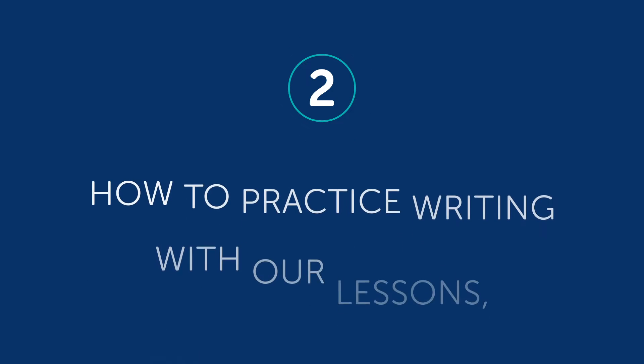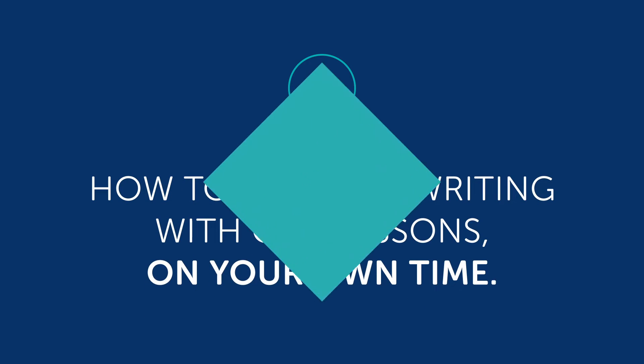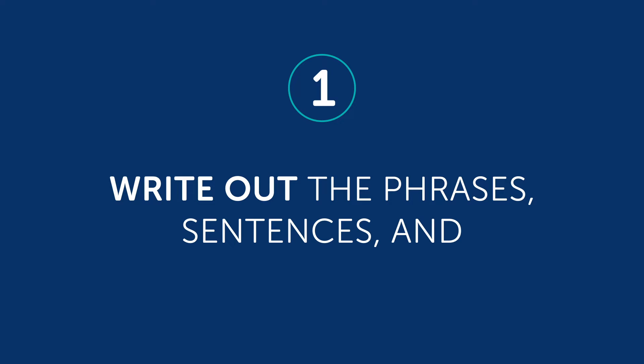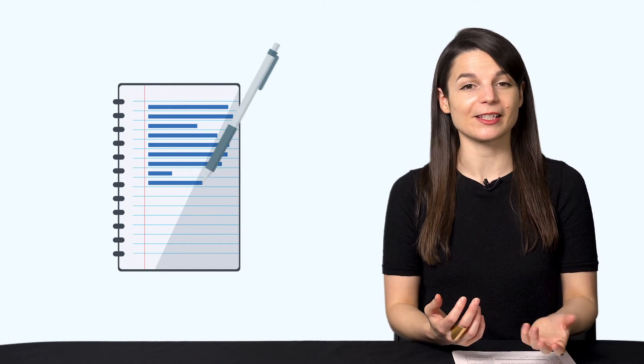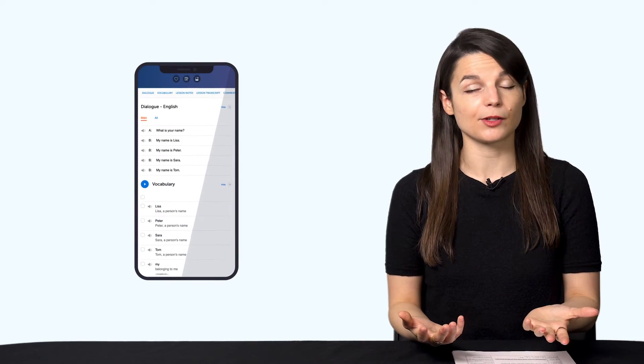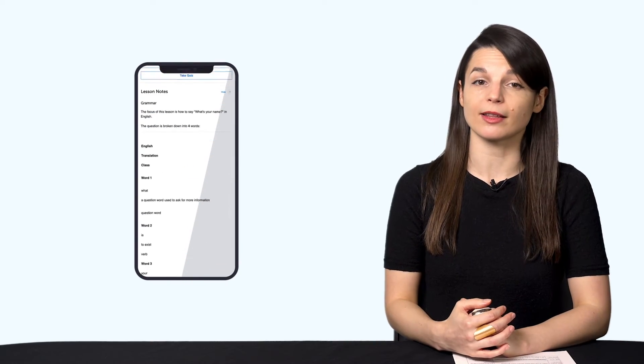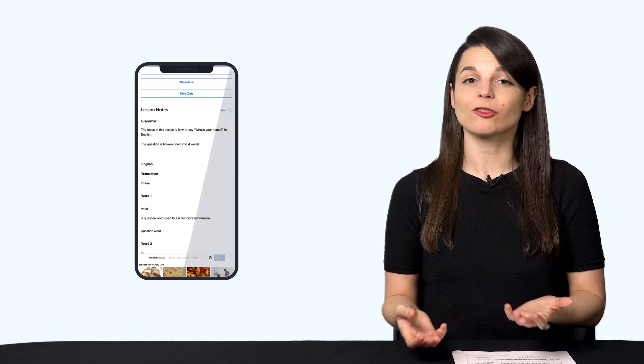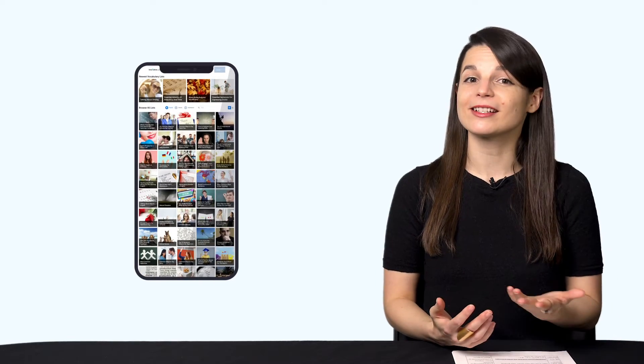Part two, how to practice writing with our lessons on your own time. Number one, if you're taking our lessons, write out the phrases, sentences, and conversations by hand. This means writing every phrase and sentence that you learn in the lessons by hand in a notebook. You can also write out the conversations in the dialogue study tool, example sentences from the lesson notes, words and phrases from our vocabulary lists, and words and sentences from the Daily Dose app and the word of the day.